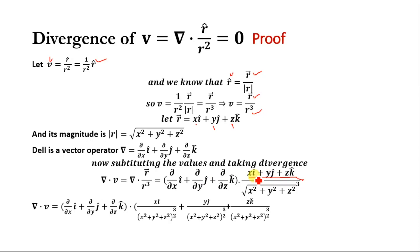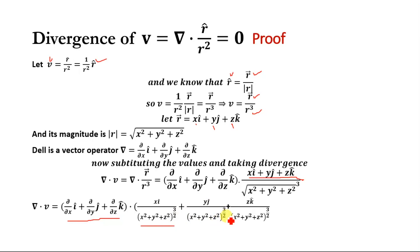Before taking the dot product we simplify: del·V = (xi)/(x²+y²+z²)^(3/2) + (yj)/(x²+y²+z²)^(3/2) + (zk)/(x²+y²+z²)^(3/2), separating the xi, yj, and zk components from each other.